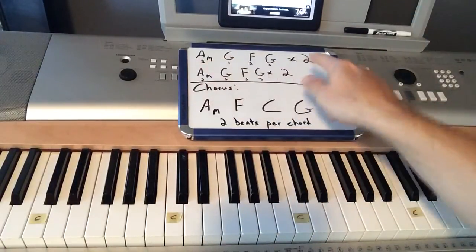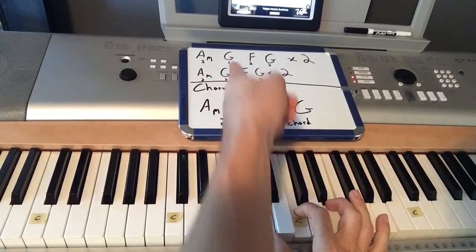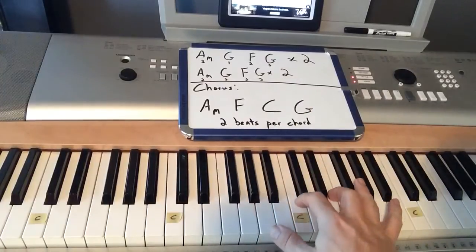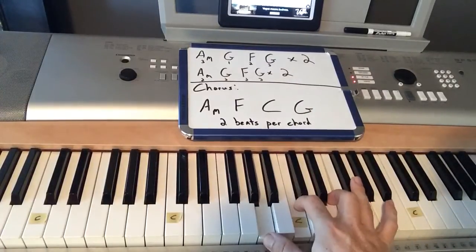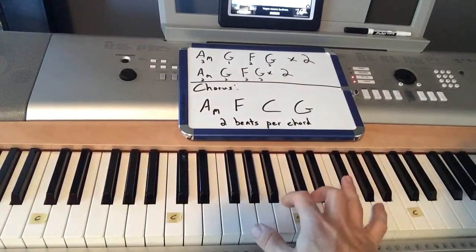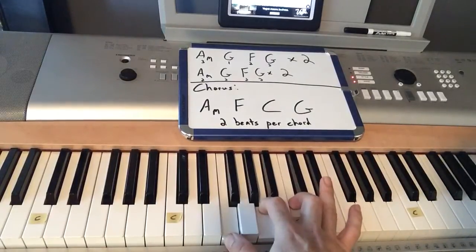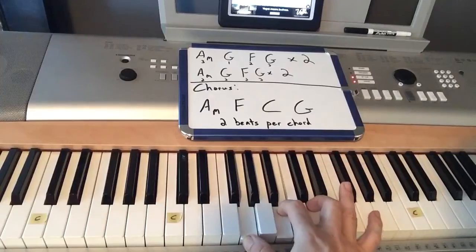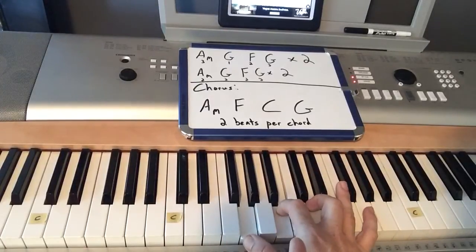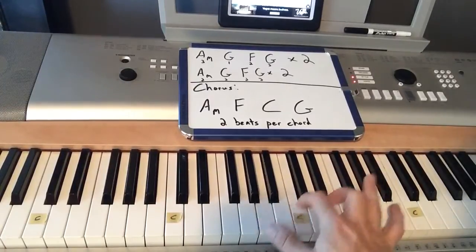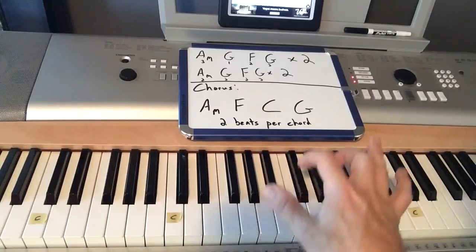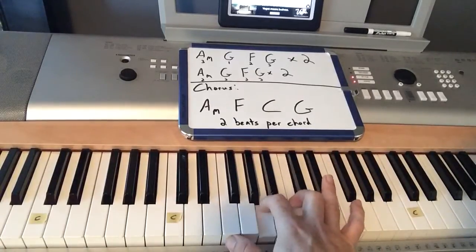So start for this verse, you're going to start with that A minor three times. Before I bring my need, I will, and then go one G, bring my, then two F's. Two F's, two G's. And you'll repeat the same thing. Before I lift my cares, I will lift my arms.